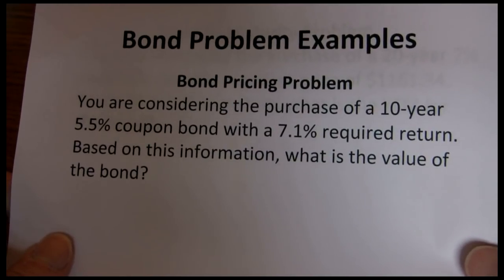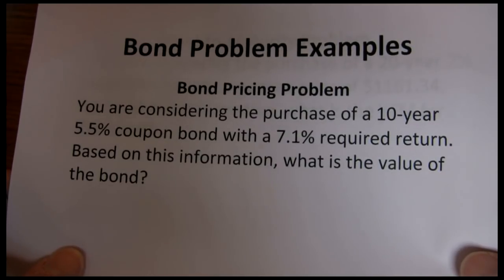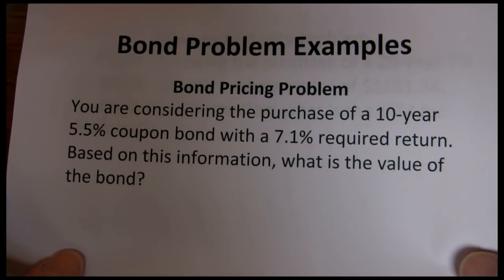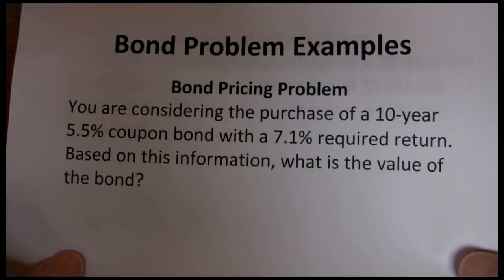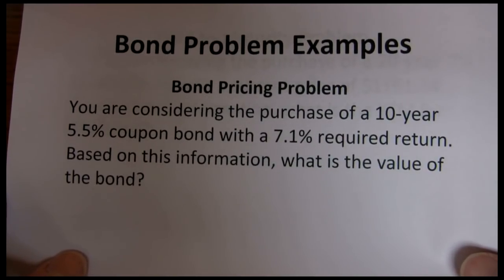Whenever we do bond pricing, we're purchasing a set of cash flows. So we need to A, forecast what those cash flows are. B, choose an appropriate discount rate. And then C, solve for the present value of those cash flows.